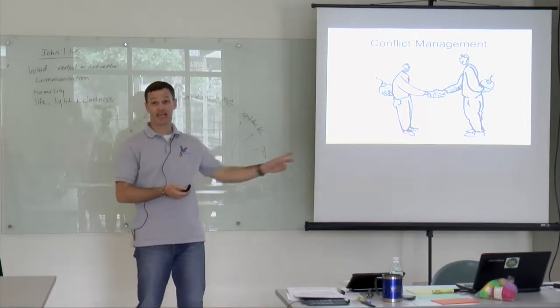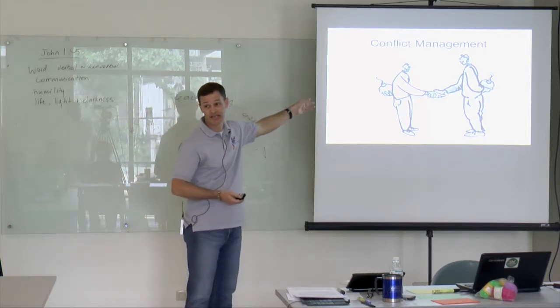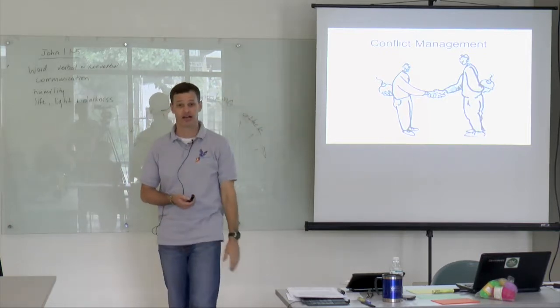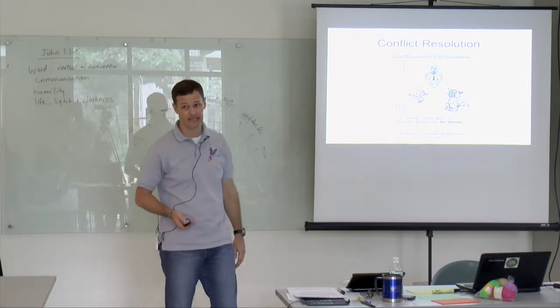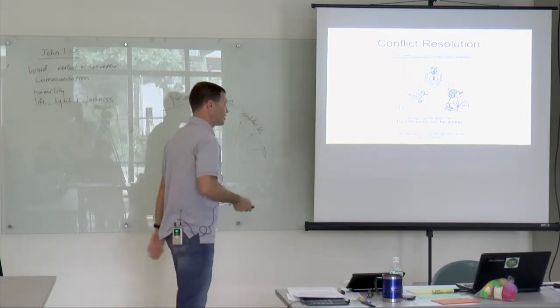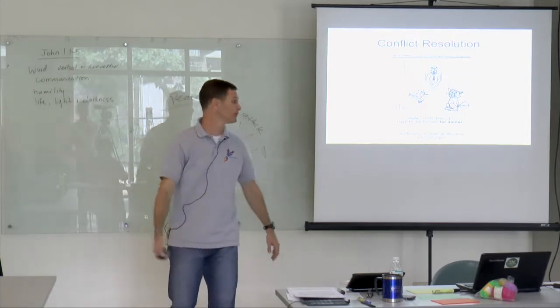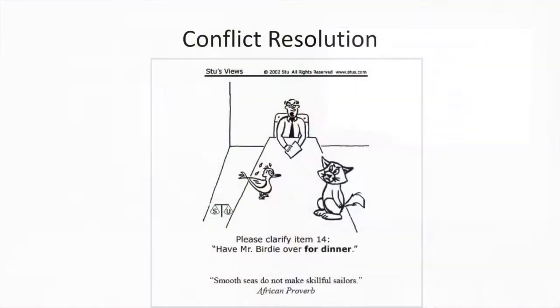So conflict management - sometimes the issue is still there because we didn't actually look into the relational aspects. Conflict resolution would say 'Oh, we need to go a bit deeper. We need to really talk about communication and helping people communicate better.' So that's why we want to clarify. The cat wants to have Mr. Birdie over for dinner - what does that mean? The cat will eat Mr. Birdie, or they will eat together their dinner?